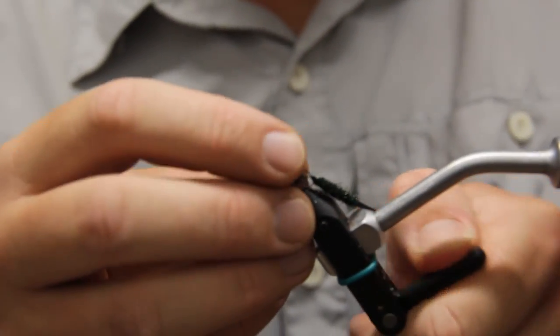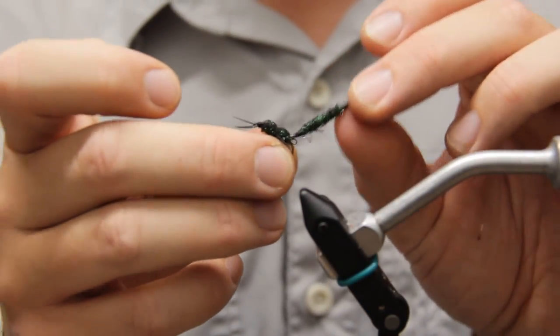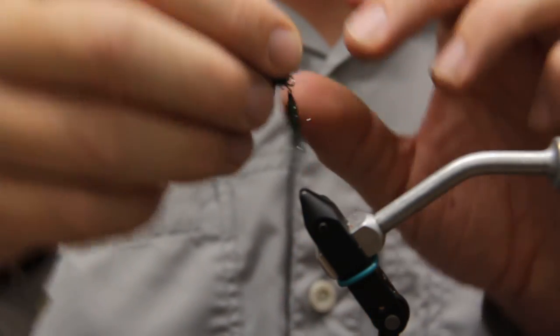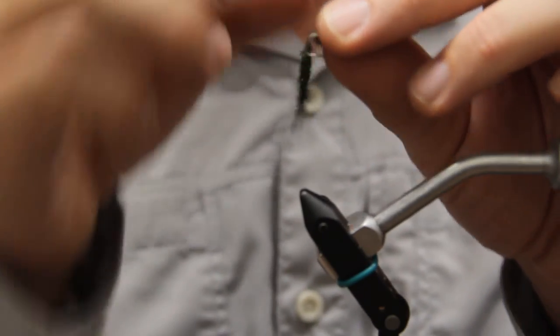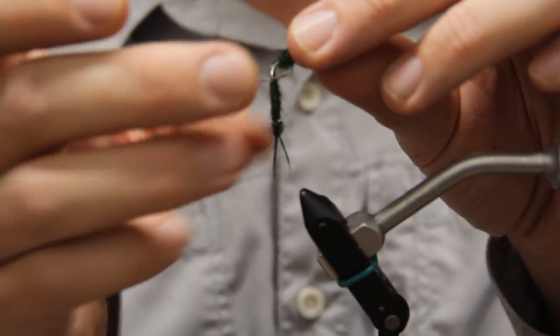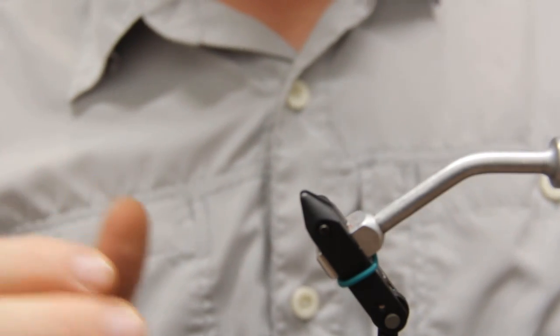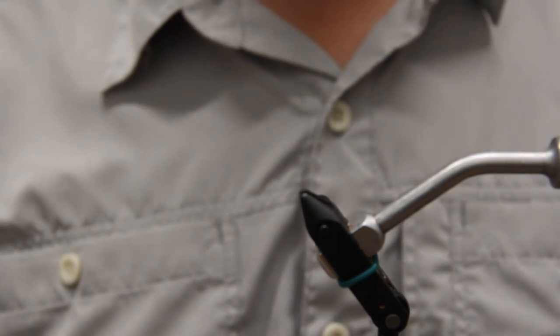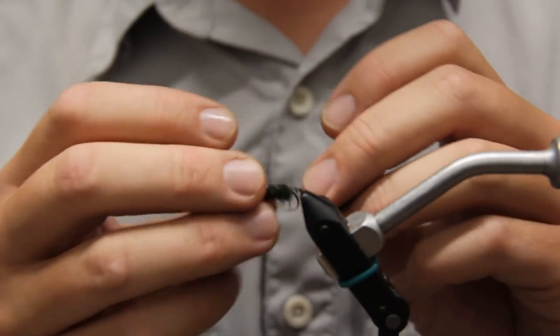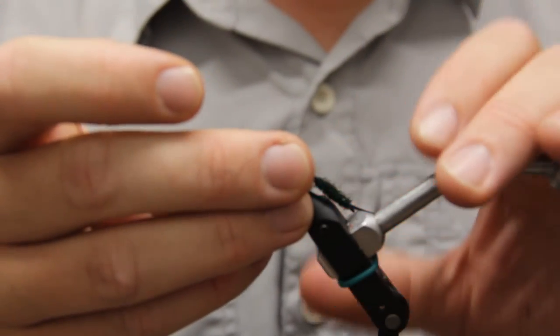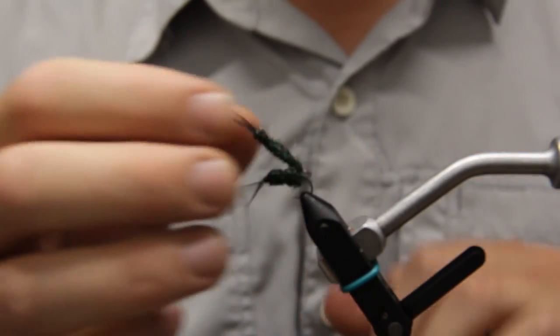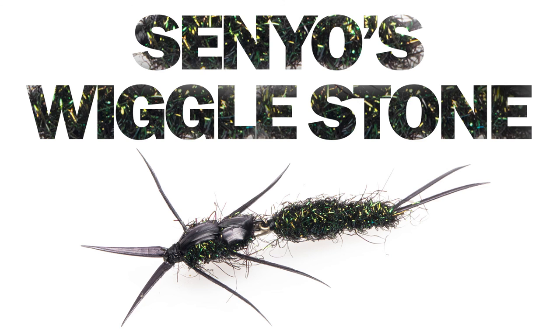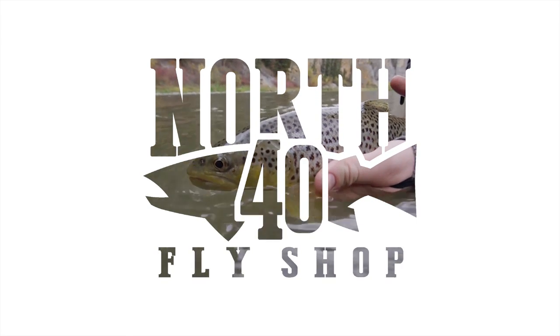So this thing is going to wiggle around in the water. It adds a lot of realism to how a fly tumbles in the current. So feel free to check out our other videos at North 40 Fly Shop.